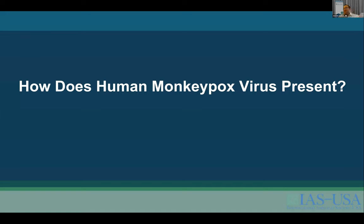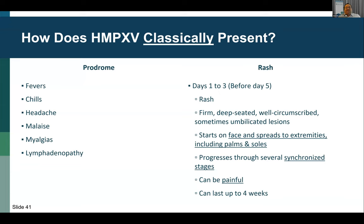The classic presentation starts with a viral prodrome — fevers, chills, headache, malaise, myalgias, and lymphadenopathy. After the prodrome, patients usually develop a rash, most frequently between days one and three. The rashes are firm, deep-seated, well-circumscribed, and sometimes umbilicated lesions that can be very painful. They classically start on the face and spread to the extremities, including palms and soles, progressing through several synchronized stages, and can last up to four weeks before healing.